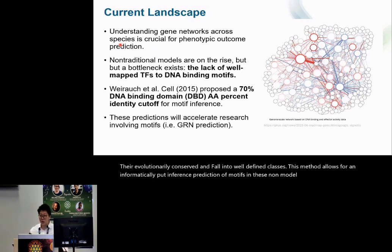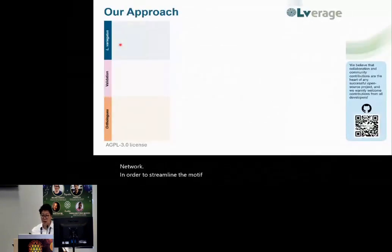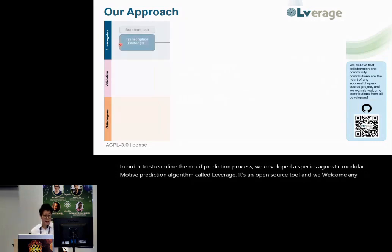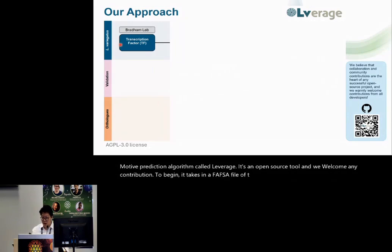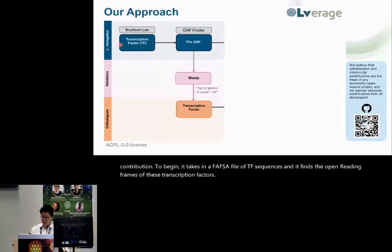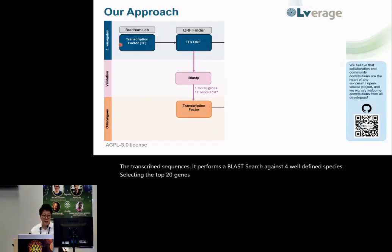These predictions will accelerate any research that involves motifs, including gene regulatory networks. In order to streamline the motif prediction process, we developed a species-agnostic modular motif prediction algorithm called Leverage. It's an open-source tool, and we welcome any contribution. It takes in a FASTA file of TF sequences, finds the open reading frames of these transcription factors, and using the transcribed sequences, it performs a BLAST search against four well-defined species, selecting the top 20 genes per species with an e-value less than 10 to the minus 6.